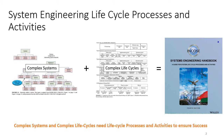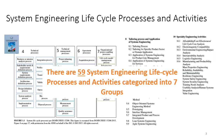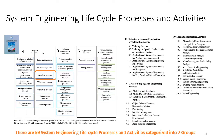The System Engineering Handbook has processes and activities defined in order to manage the development of complex systems for complex life cycles. These processes and activities number 59 and they are categorized into seven groups. The topic of this video is the transition process that falls in the technical processes group.